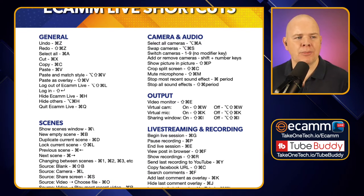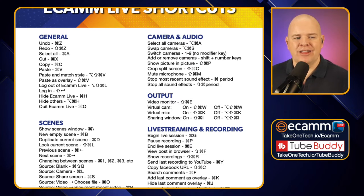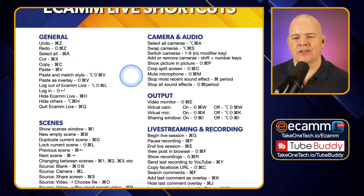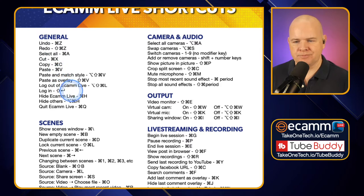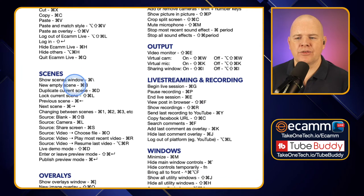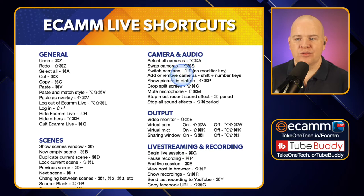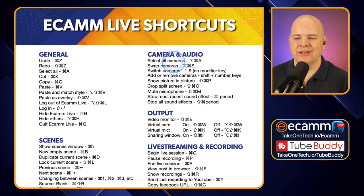An example of that would be: there is a menu command in the Edit menu which is 'stop most recent sound effects' or 'stop all sound effects.' Well, you might not necessarily think to look in the Edit menu for something related to sound. So I've tried to group these. There are some general things like undo, copy, paste, paste as overlay and things like that. But then I've split things out so we've got a section for scenes, and we've got a section for audio and camera — so 'stop most recent sound effect' is in the audio section where you would expect to find it.